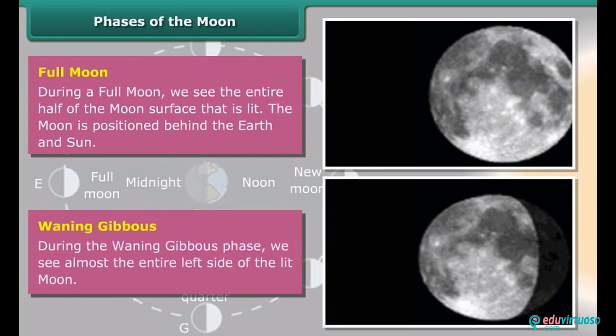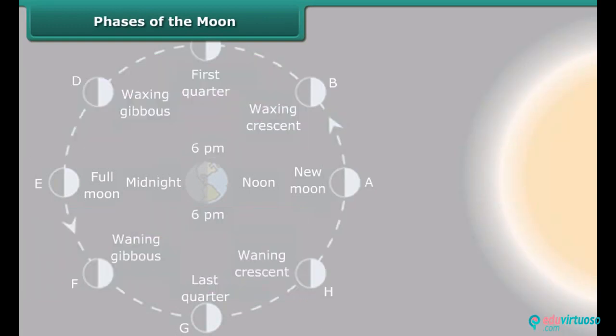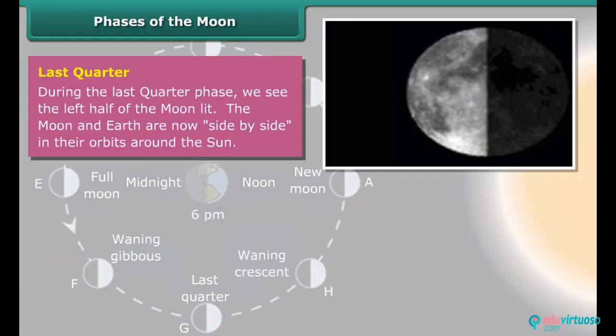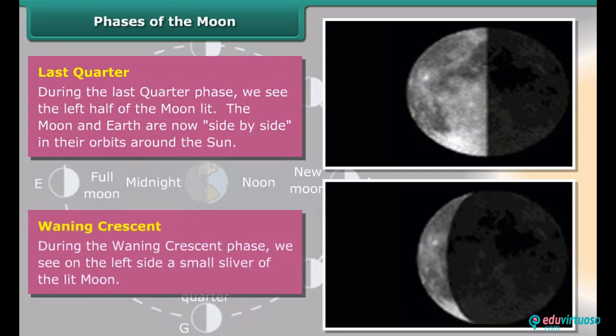During the Waning Gibbous phase, we see almost the entire left side of the lit Moon. Last Quarter: During the Last Quarter phase, we see the left half of the Moon lit. The Moon and Earth are now side by side in their orbits around the Sun. Waning Crescent: During the Waning Crescent phase, we see on the left side a small sliver of the lit Moon.